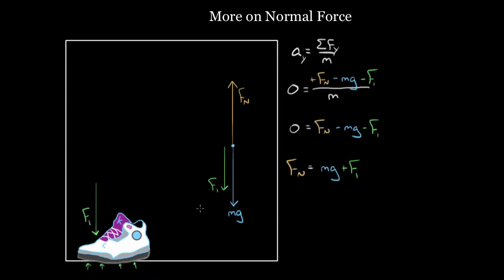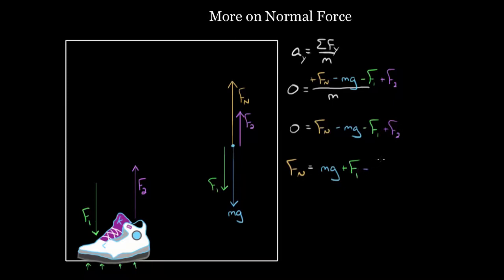If you had an upward force — let's say someone's pulling up on the shoe while you push down, you're wrestling over it because they love the shoe — if there's an F2 pointing up, we'd have another upward force in our diagram. Over here, the acceleration is still zero, but I'd have to add F2 vertically: a plus F2 term. Then when I solve for Fn, I add mg to both sides, add F1 to both sides, and subtract F2 from both sides. So Fn equals mg plus F1 minus F2.